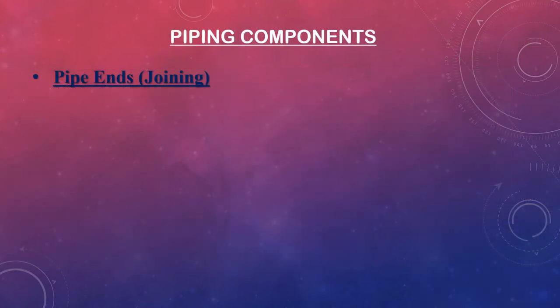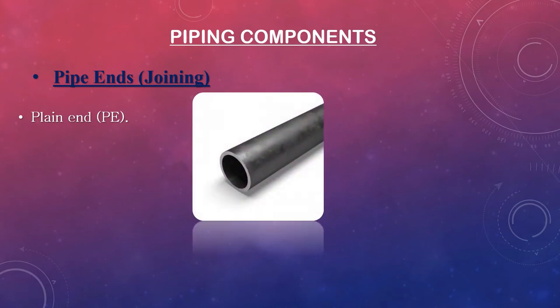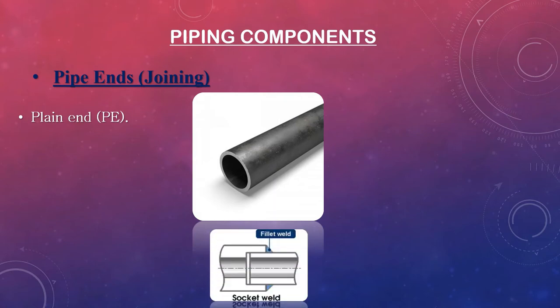We shall now review other aspects to specify when describing a pipe — specifically the pipe end, or the method of joining the pipe with other components. Three standard pipe end versions are available. Plain ends (PE) are typically cut at a 90-degree angle to the pipe run for a flat, even termination. In most cases, plain end pipes are used with slip-on flanges and socket weld fittings and flanges, making them ideal for small diameter piping systems.